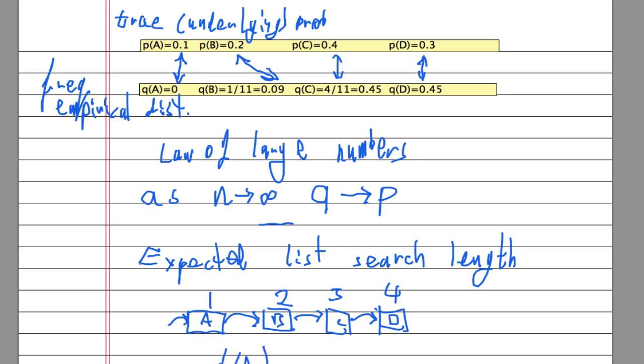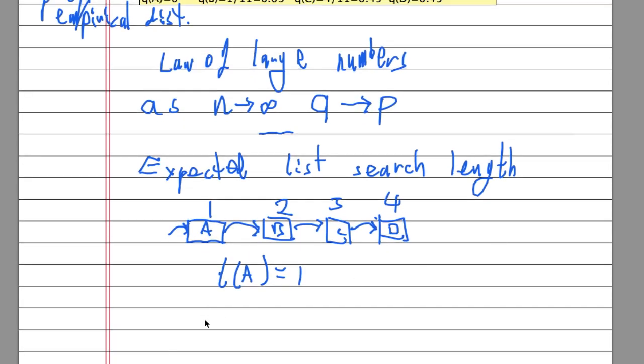And what we get in terms of the expected length, it is the sum over all the letters. So, I - let's say that I goes from A, B, C, D - and this is the probability of I times L of I. Okay, so here we're using the true distributions.